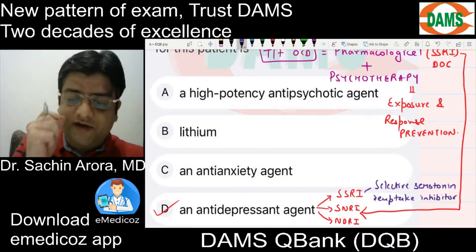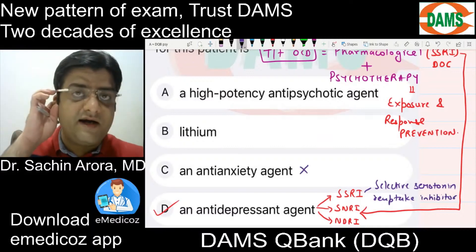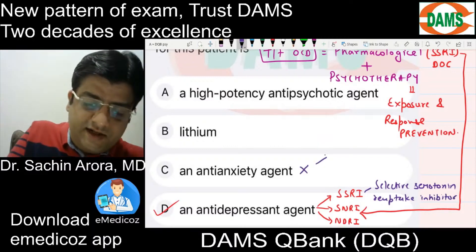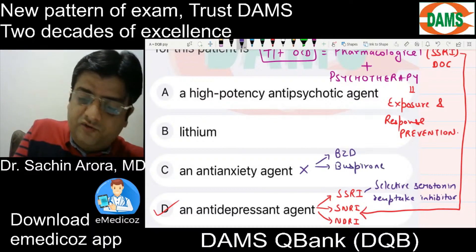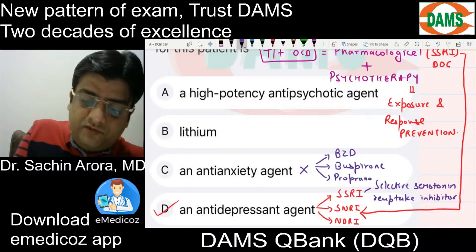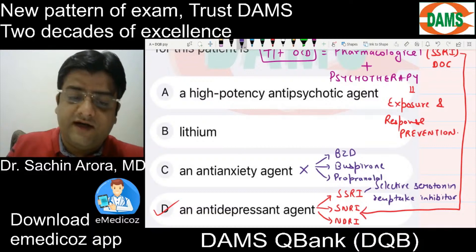A very common mistake done by students here is that they mark it as an anti-anxiety agent. Anti-anxiety agents primarily include benzodiazepines, buspirone, azapirone group, and propranolol beta-blocker group. As far as classification is concerned, SSRI belongs to the antidepressant group, although it is the drug of choice for OCD.